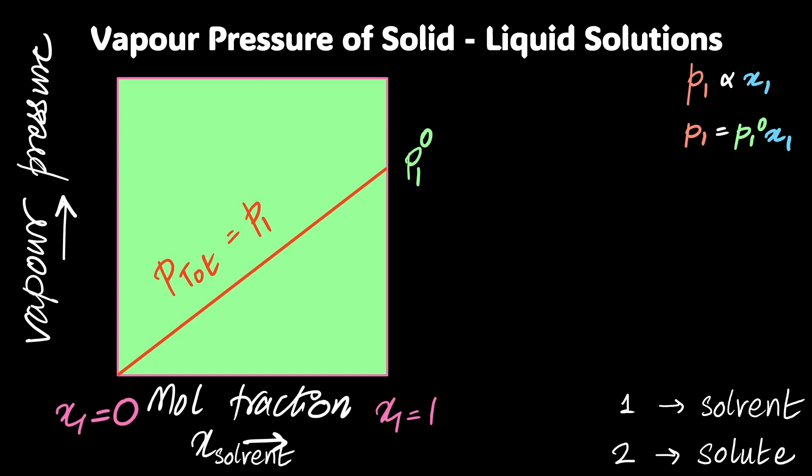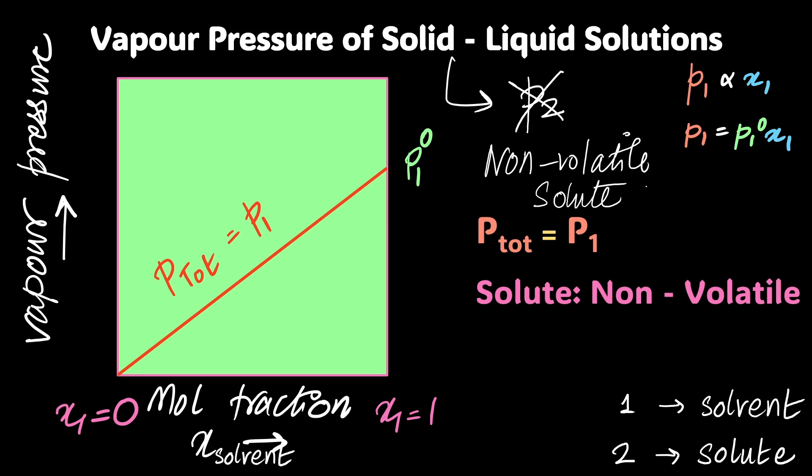And the total pressure is going to be just equal to P₁ because P₂, I'm going to say this again and again, does not exist. Why? Because this is a non-volatile substance, solute in this case. So P total is going to be just equal to P₁ because the solute is non-volatile.